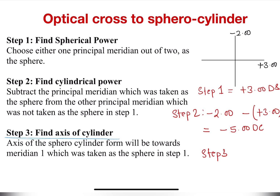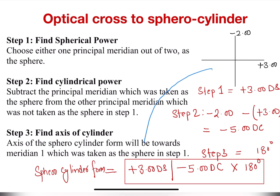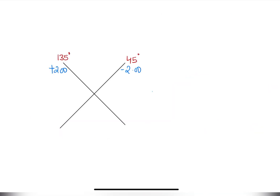Step three is to find the axis of the cylinder. The axis in the sphero-cylindrical form will be towards the meridian which was taken as the sphere. Meridian one was towards 180, so our axis will be towards 180 degrees. Now we write it in sphero-cylindrical form: first the sphere found in step one, then the cylinder from step two, and the axis at 180 degrees.